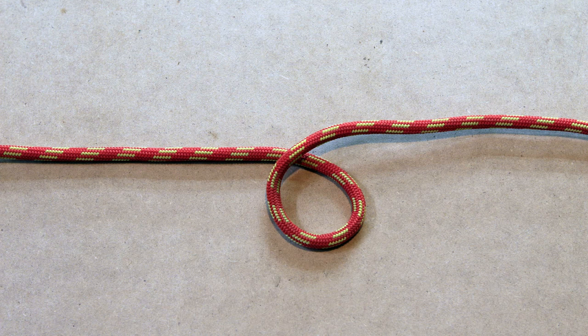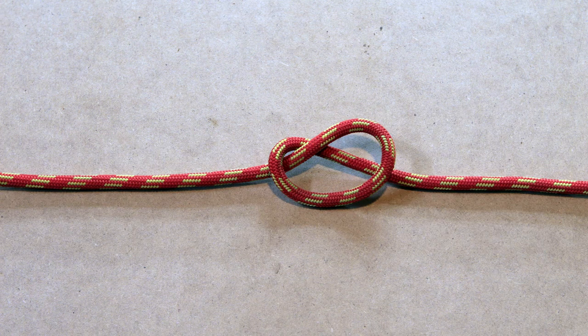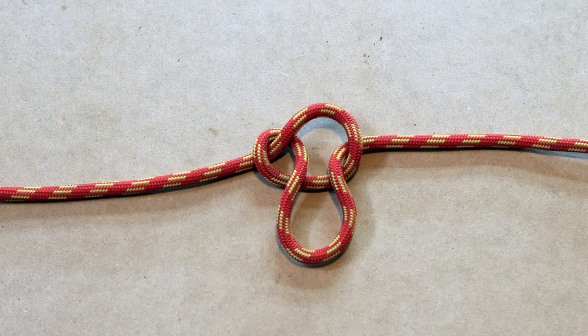First we form a loop in the rope. Next, we take this loop and lay it over the standing part of the line. Now pull a bight of line through the loop.